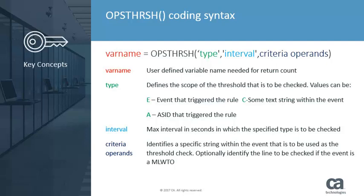The second required argument to the function is the interval, which sets the max time in seconds in which the specified type is to be checked. The last arguments to the OpsThresh function are the criteria operands, which identify a specific string within the event to be used as the threshold check, including the line of the message in which the string occurs if an MLWTO message is being processed.